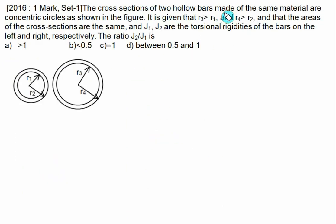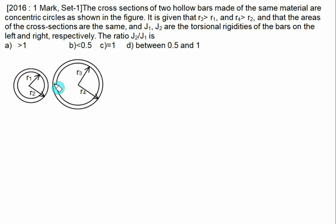The cross-sections of two hollow bars made of the same material with the same modulus of rigidity are concentric circles. It is given that r3 > r1, r4 > r2, and the areas of the cross-sections are the same. J1 and J2 are the torsional rigidities of the left and right bars. We need to calculate J2/J1. Since the material is the same, torsional rigidity is proportional to the polar moment of inertia, so we calculate J2/J1 as the ratio of polar moments.